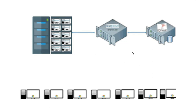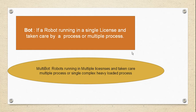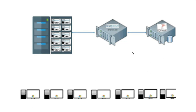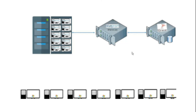Think about having 10 clients and a resource PC. How multiple clients connect through to the control room and the bot — it all works with licensing. We can interlink our license with a single process or interlink our license with multiple processes.